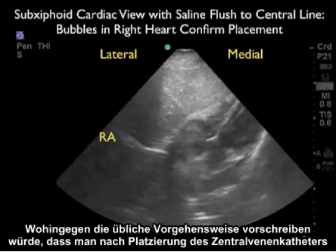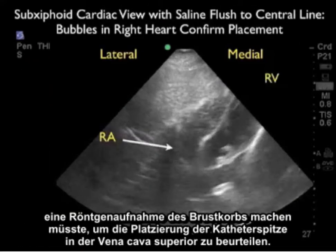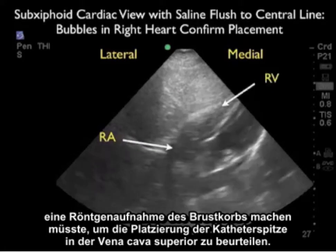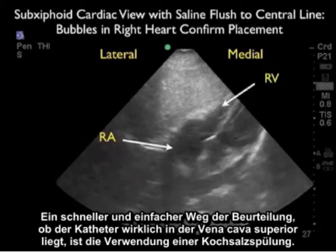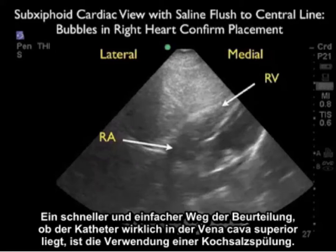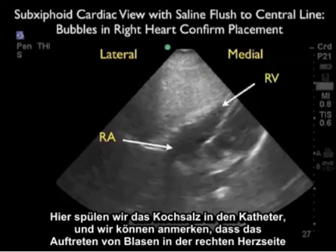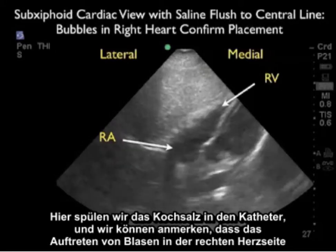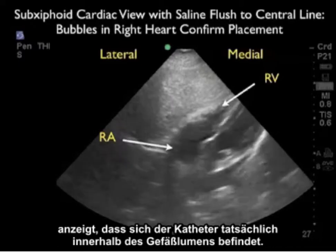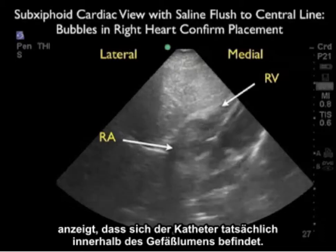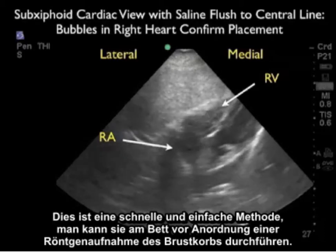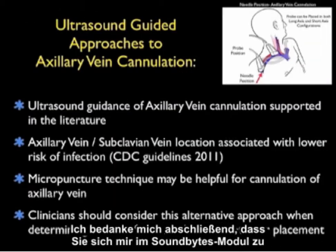While standard practice calls for a chest radiograph after central line placement to confirm catheter tip position in the superior vena cava, a quick bedside method is to use a saline flush. Flushing saline into the catheter, we can note the presence of bubbles within the right side of the heart on ultrasound, confirming the catheter is within the vessel lumen — a rapid verification prior to obtaining the chest radiograph.